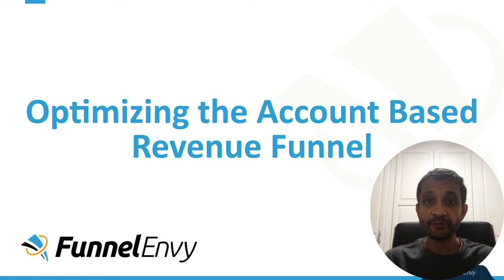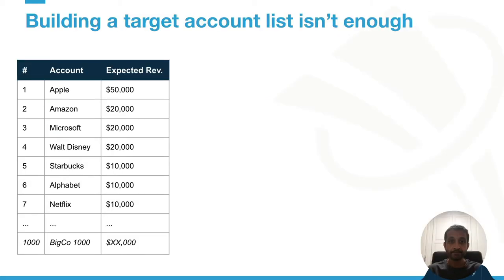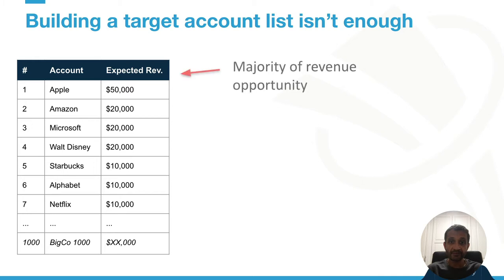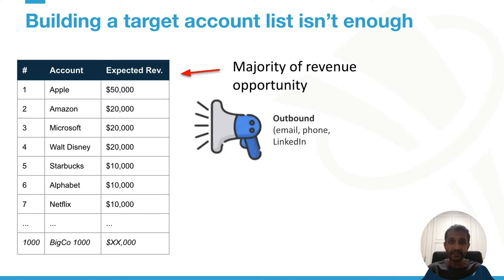Hi everyone, I'm Maroon from Funnel Envy, and today I want to spend some time talking about optimizing the account-based revenue funnel. Let's assume that you're targeting B2B companies and you've built out your account list. If you have a heavy ABM strategy, you know that those accounts probably represent the vast majority of your potential revenue. So how do you go about converting that opportunity into conversations and qualified pipeline?